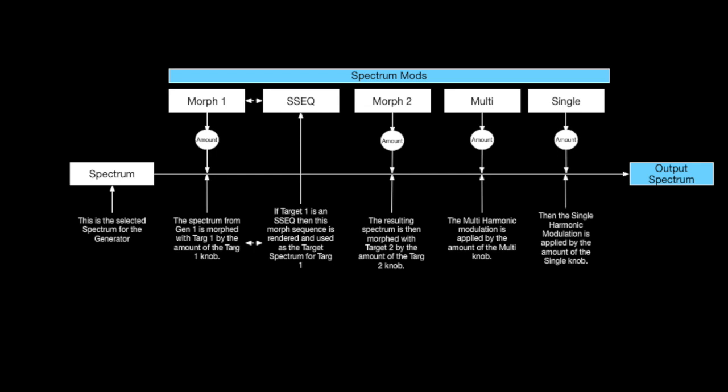You can also use the spectrum analyzer to capture the spectrum output of generator 1, generator 2, or generator 1 and 2, including all of the spectrum modulators applied, and use this spectrum as the starting spectrum in the generator's waveform spectrum. The spectrum analyzer is covered in more detail in the analyzer video.